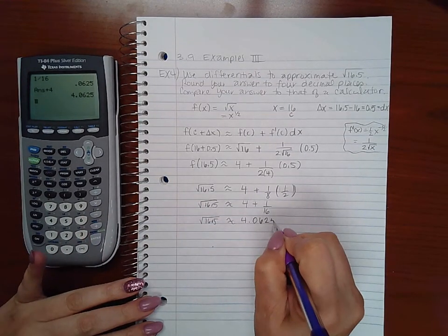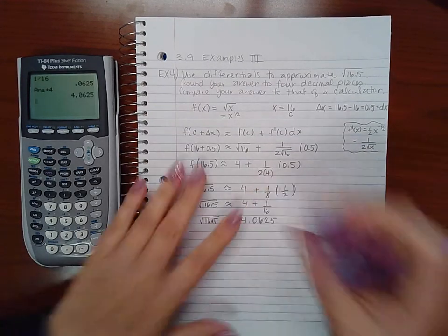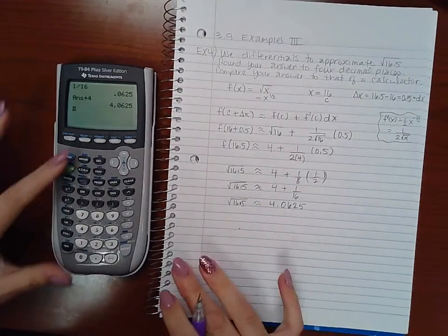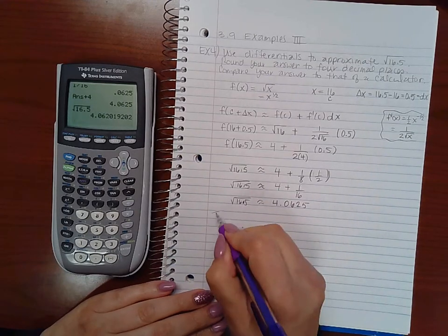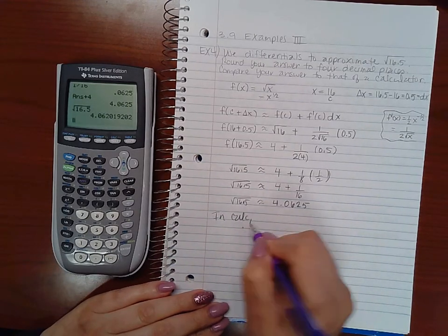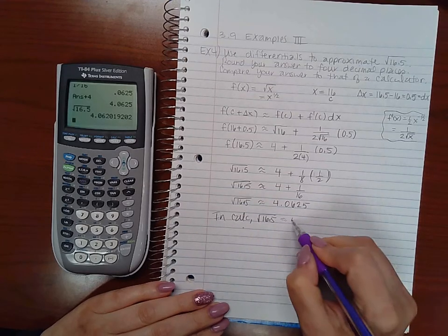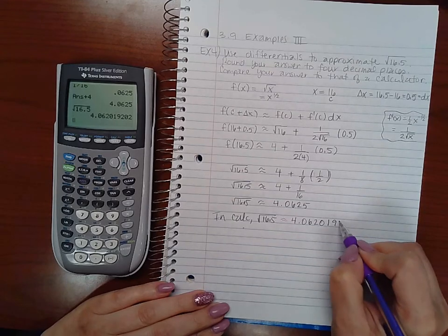So that's my approximation. And then it says to compare it with that of a calculator. So what would I get if I just typed in square root of 16.5 in the calculator? Square root of 16.5 is approximately 4.062019202.